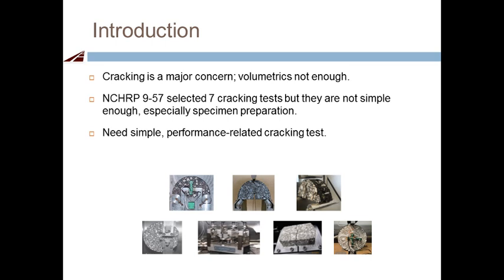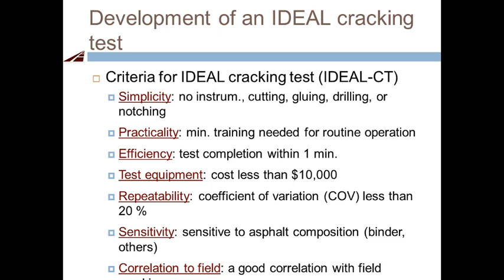That's why we started this ideal cracking test project with NCHRP IDEA. When we developed the ideal cracking test, we set up seven criteria. Number one is simplicity — no instrumentation, no cutting, no gluing, no drilled holes, no coring, no notching. Just mold the specimen and test it.